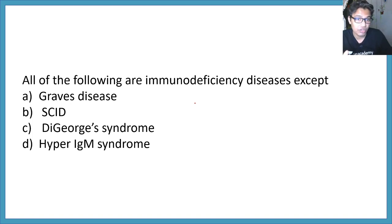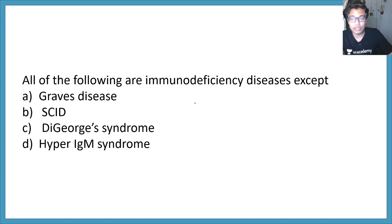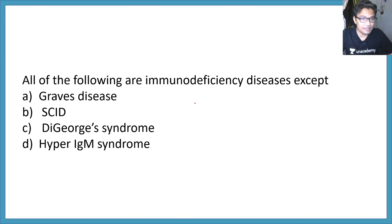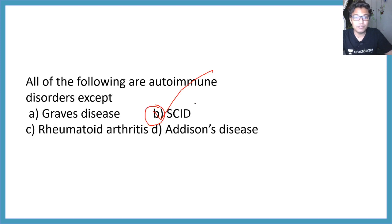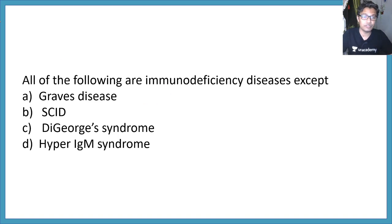This format of question is very important because these specific names are asked in IITJAM, GADB, or other MSc-level entrance exams. All of the following are immunodeficiency disorders except: SCID, DiGeorge syndrome, hyper-IgM syndrome, or Graves' disease? In the previous question, Graves' disease was an autoimmune disorder, so obviously it is the correct answer here — it is not an immunodeficiency disorder.